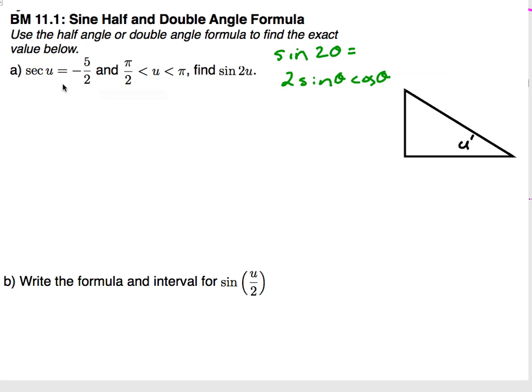I do give you some information. I'm telling you that the secant of u is negative 5 halves, and we also know that u is in between pi over 2 and pi. What this is telling us is that u is in quadrant 2, which we need to know in order for positive and negative values for our trig functions.